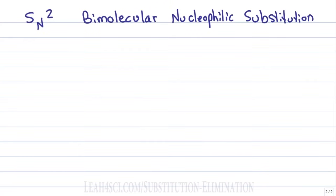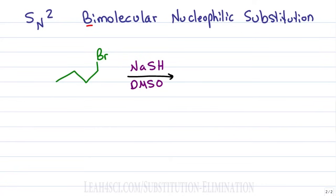SN2 stands for bimolecular nucleophilic substitution, where bimolecular means two molecules reacting at the same time in a one-step, no-intermediate reaction. For this reaction, we have a primary leaving group reacting with NaSH in a polar aprotic solvent, DMSO. Any time you see Na, recognize the spectator positive ion giving us a negative S, which is a good nucleophile.